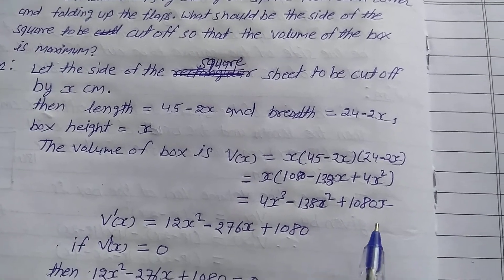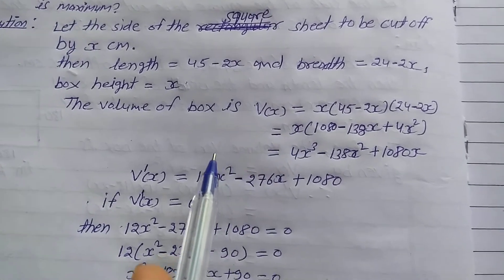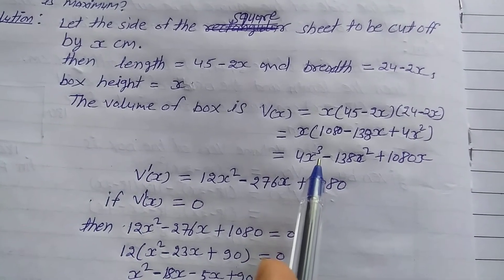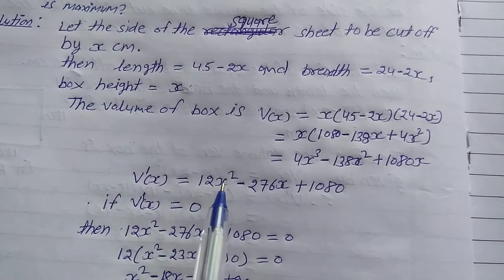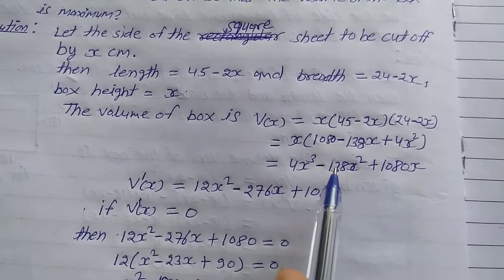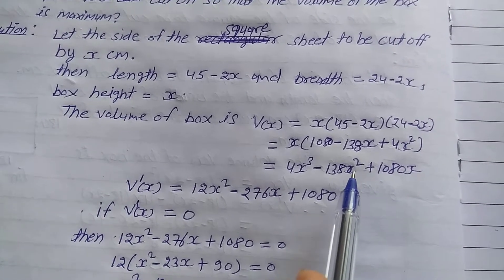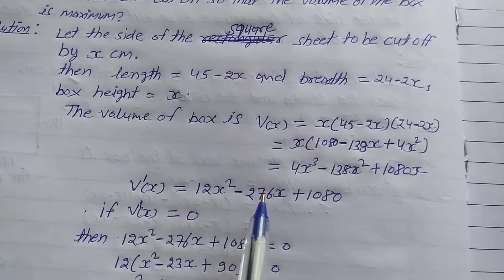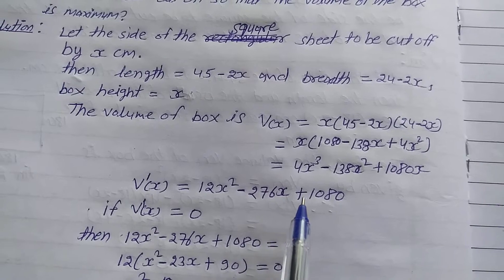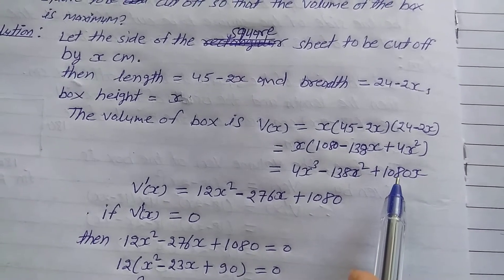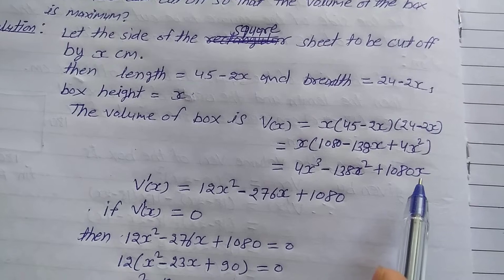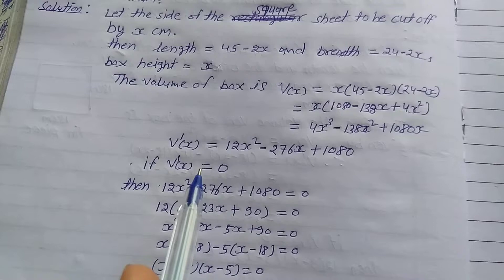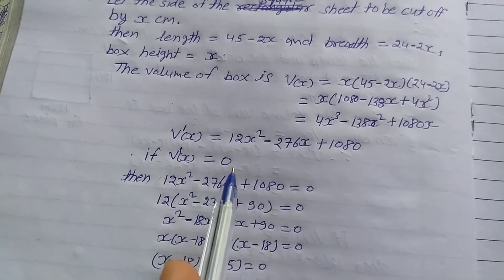Differentiating with respect to x: V'(x) is equal to 12x squared minus 276x plus 1080.